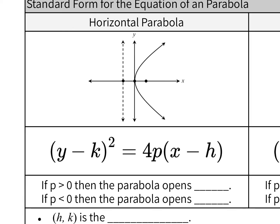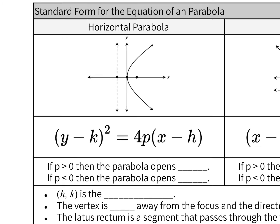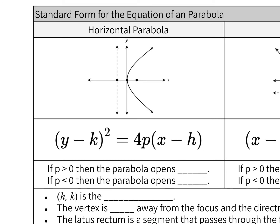A horizontal parabola opens either to the left or to the right. The equation you're going to use is (y - k)² = 4p(x - h). If p is greater than 0, looking at this number here, it's opening to the right. If it's less than 0, so that means negative numbers, it's going to open to the left.